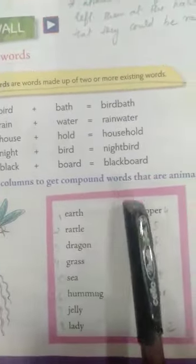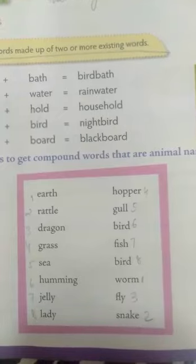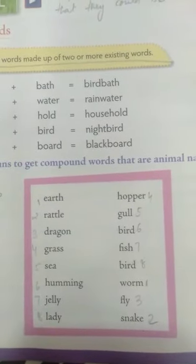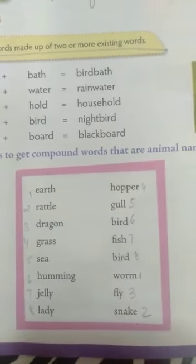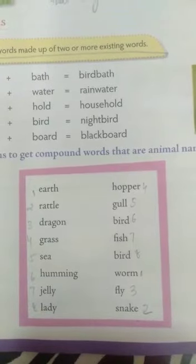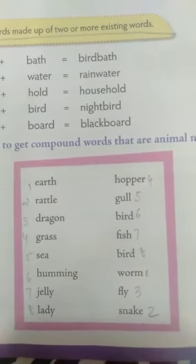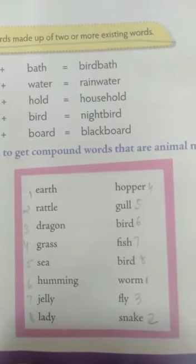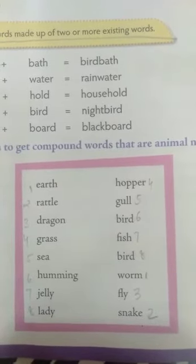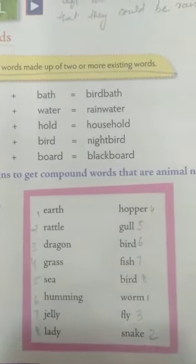Earth — worm; rattle — snake; dragon — fly; grass — hopper; sea — gull; humming — bird; jelly — fish; lady — bird.